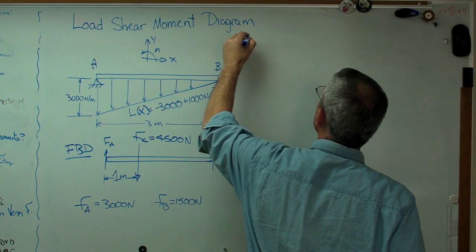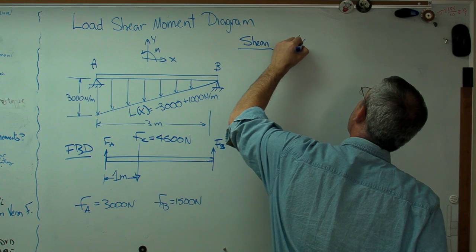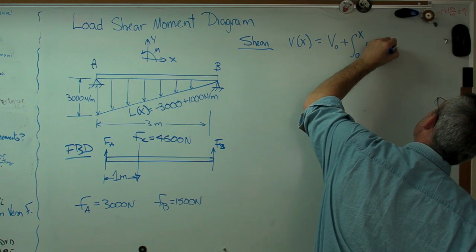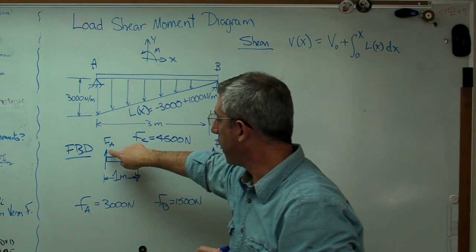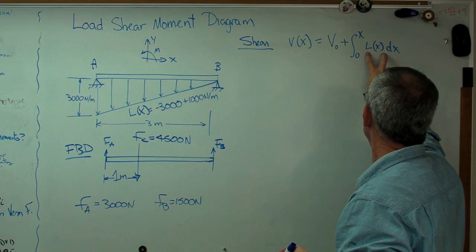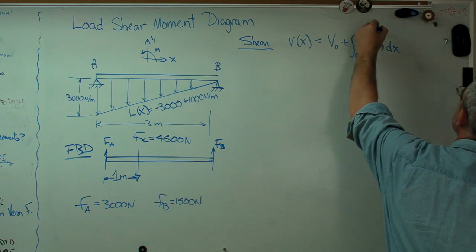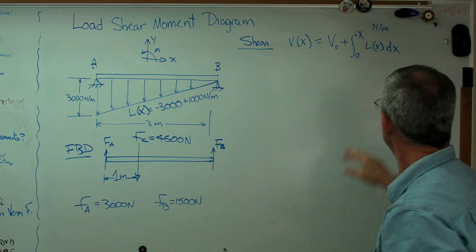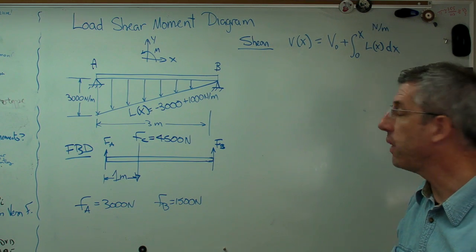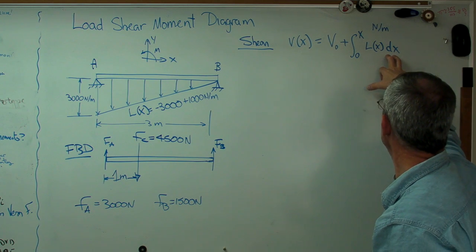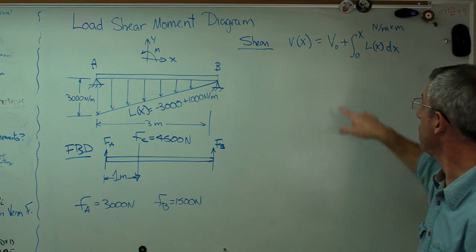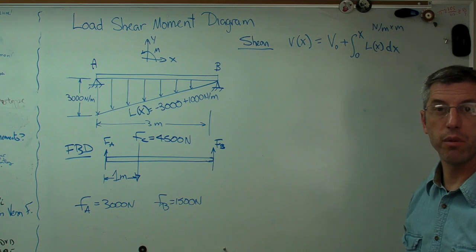Okay? Well, let's write out the shear expression. We'll always call that V of X, and that's going to be V0 plus the integral from 0 to X, L of X, dx. V0 is the shear at the end, which we know right now is 3,000 newtons. Now, the units of shear are newtons. The units of L of X are newtons per meter. So, how do I reconcile that with that? Well, dx has units. It's a little itty-bitty number. That's the whole idea of an integral. This is an infinitesimally small number. It is not 0, and it has units. It has units of length. So, that's going to be times meters. Well, newtons per meter times meter equals newtons. So, that integral there has units of newtons, which is compatible with that. So, we're good.